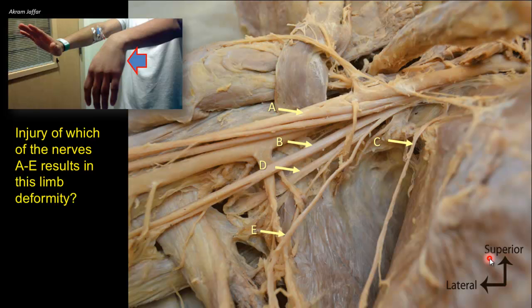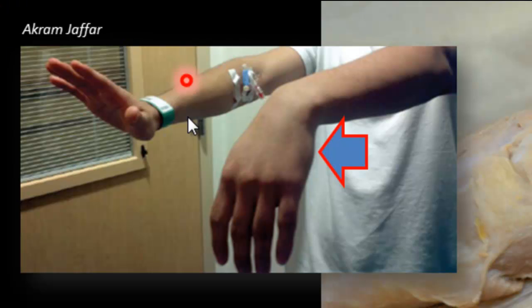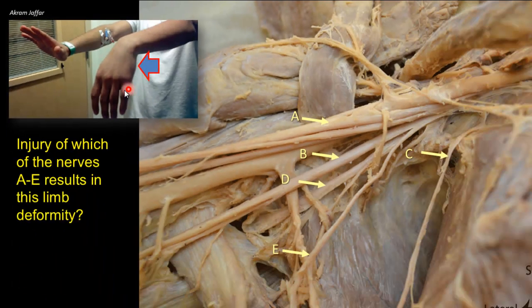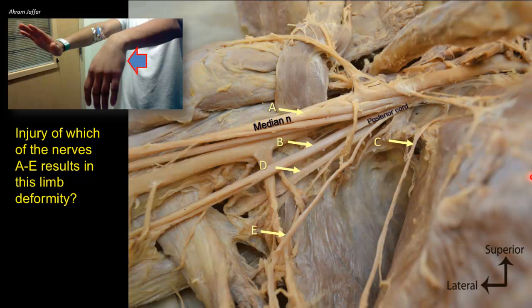Injury of which of the nerves A to E results in the limb deformity shown? This is a wrist drop deformity, where the wrist passively drops by gravity and cannot be extended due to paralysis of the extensor muscles of the forearm, which are supplied by a branch of the radial nerve. In this axilla dissection, the median nerve is formed by the medial and lateral roots at A, while B, D, and E are branches from the posterior cord. The posterior cord is clearly shown here because the axillary artery has been pushed away, revealing the cord that lies posterior to the artery — hence the name posterior cord.